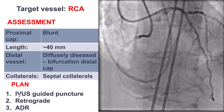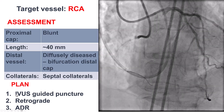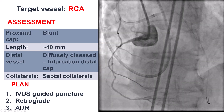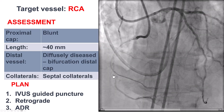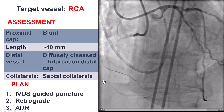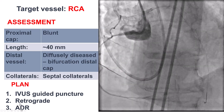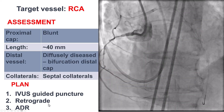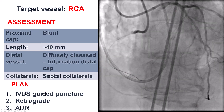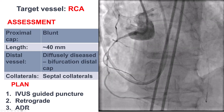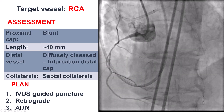Based on this, our initial plan was to perform IVUS-guided puncture of the proximal cap. If that didn't work, to try to go retrograde through the septals, and if that didn't work, to do antegrade dissection re-entry.